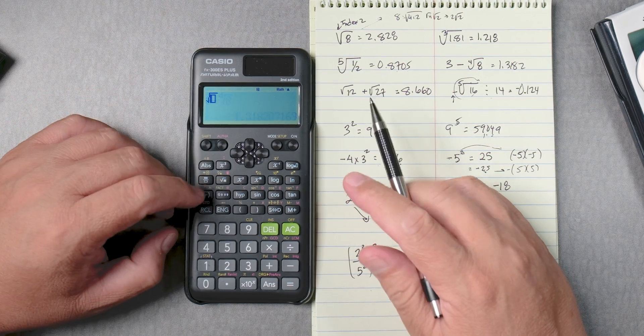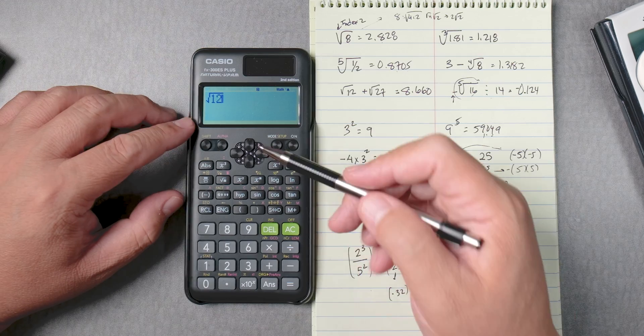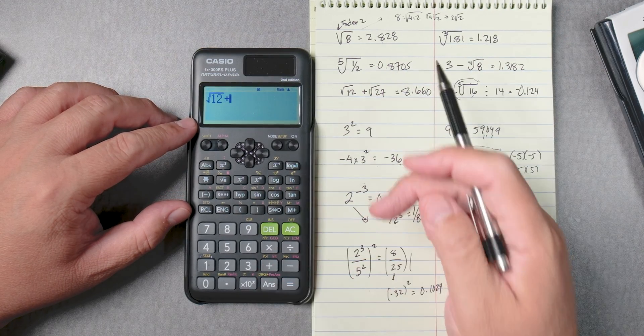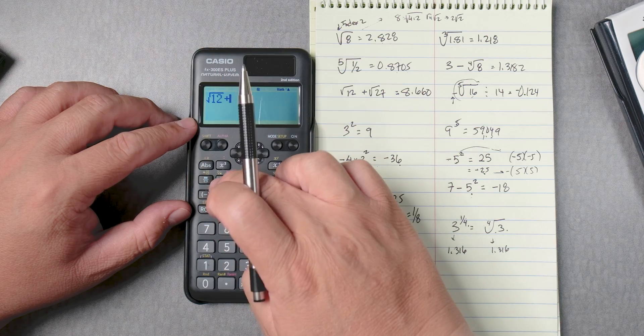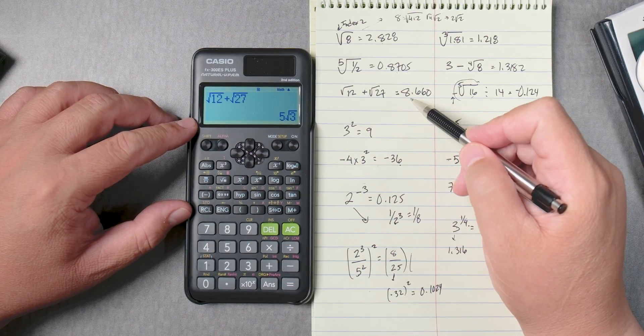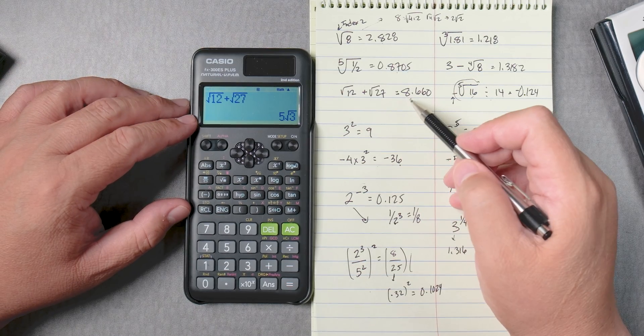Next one is the square root of 12. Then we need to use the arrow to get out of the root, plus the square root, and this is the square root of 27, equals 8 point... well this one, it simplified.